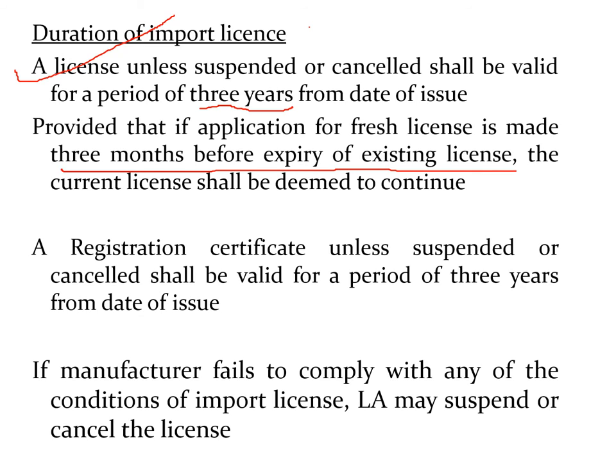The first license given is for a period of 3 years. If there are problems or discrepancies, the license may be cancelled or suspended. However, if all rules and regulations are being complied with and inspection reveals no non-conformity, then the license expires at the end of 3 years. It is necessary to apply for a fresh license 3 months before expiry of the existing license.